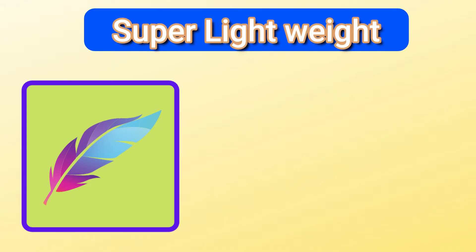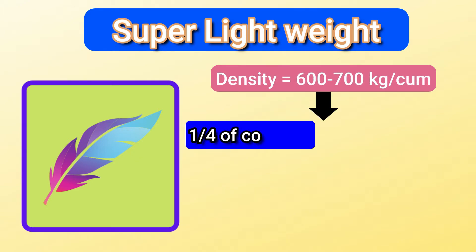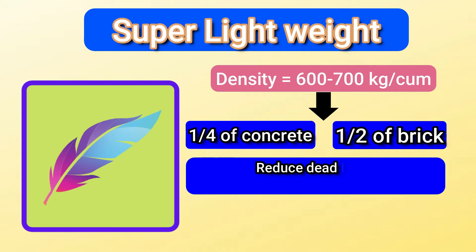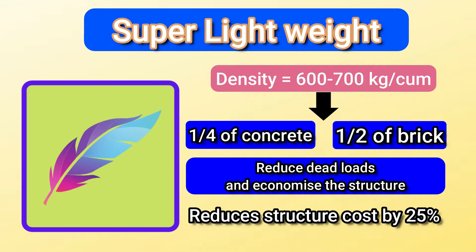ALC Panels are super lightweight material. The density is around 600 to 700 kg per cubic meter — that is one fourth of concrete and half of conventional bricks. This in turn can reduce the dead loads on the structure and economize the structure, reducing the structural cost by around 25%.